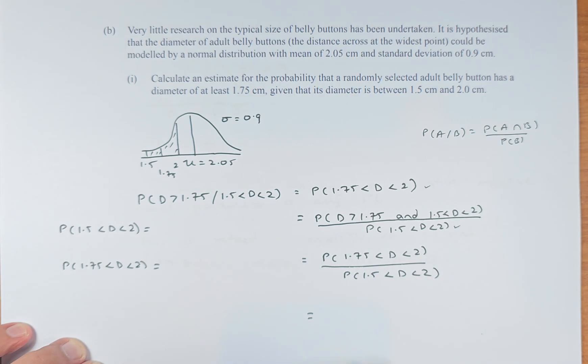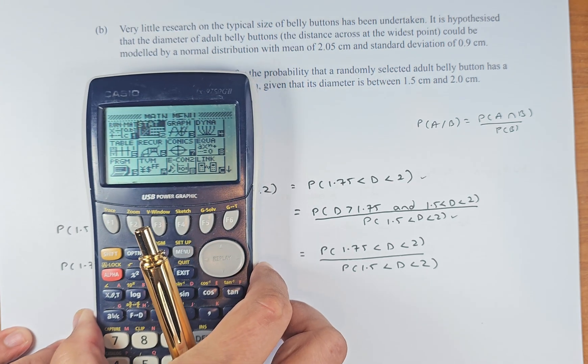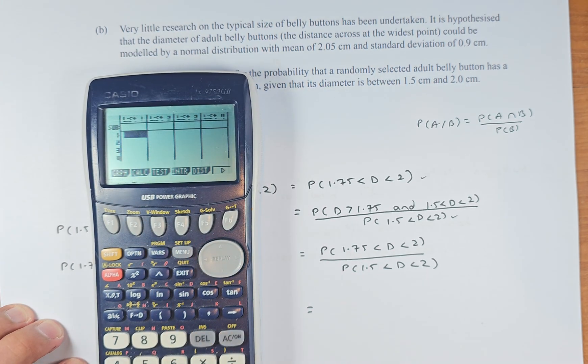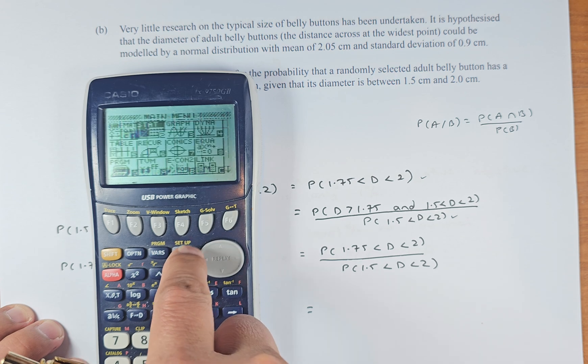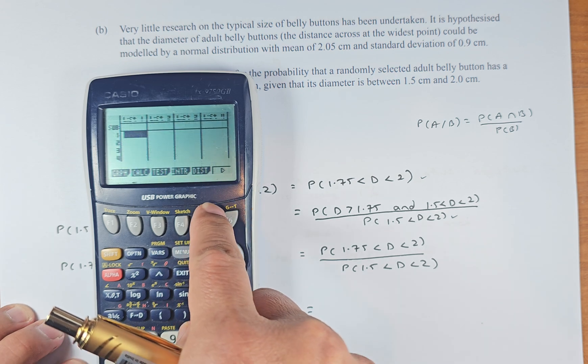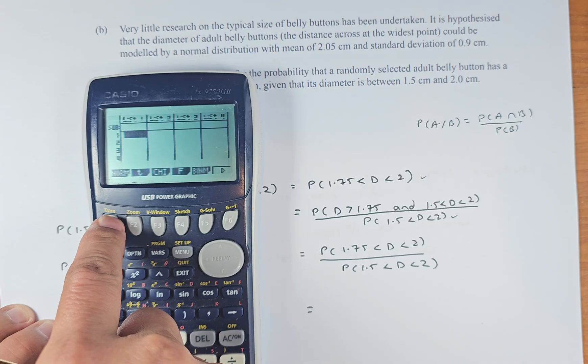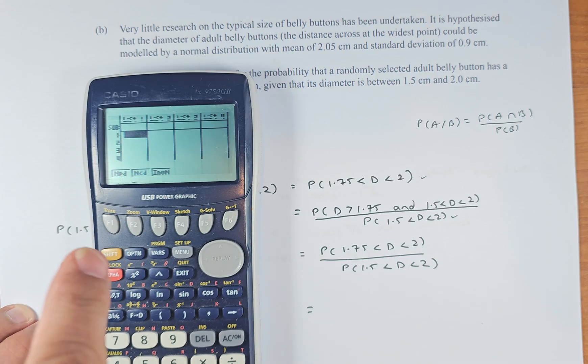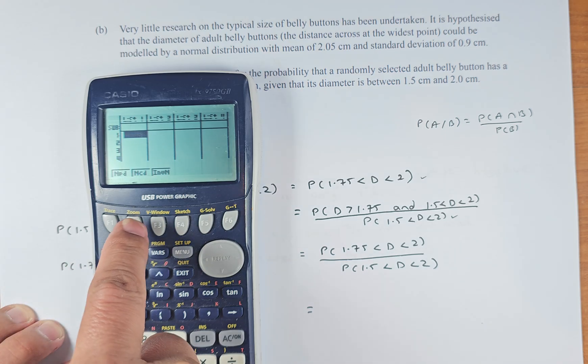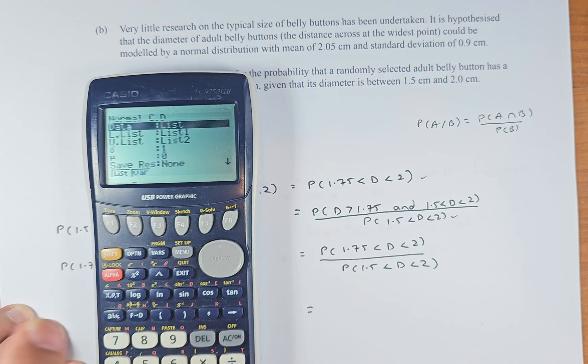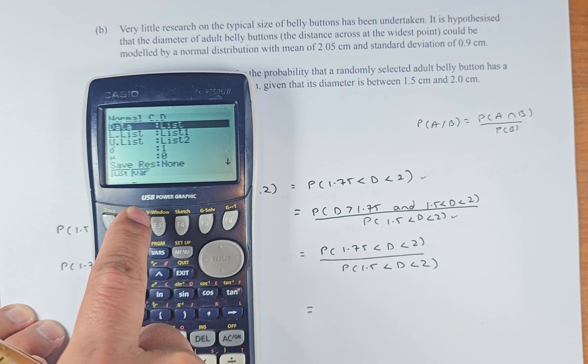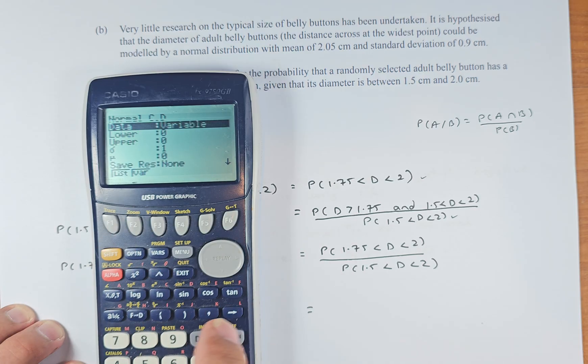So here comes the graphic calculator. Hopefully you can see. I just put it here so we can do the work there. So we are going to go to statistics menu, go to statistics. Then go to distribution and now we go to normal. This is normal. So we need to do NCD. Normal is always NCD, not NPD. So we're going to put F2, NCD and we're going to put in the data.